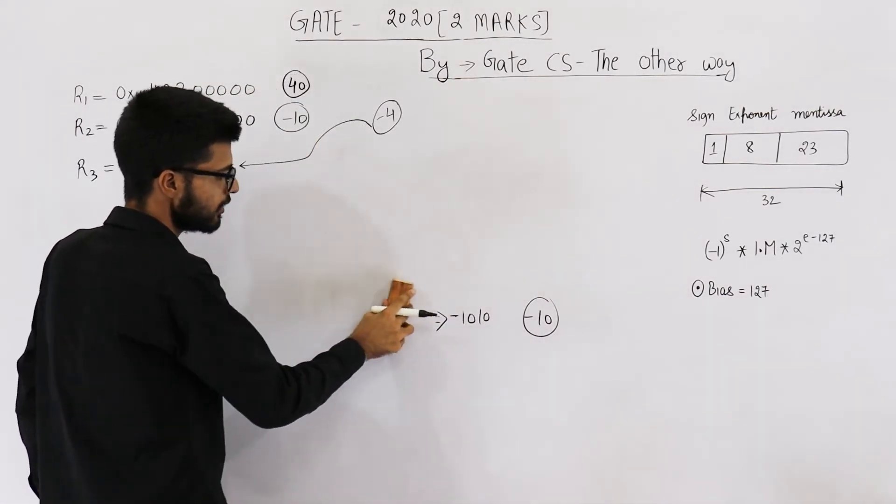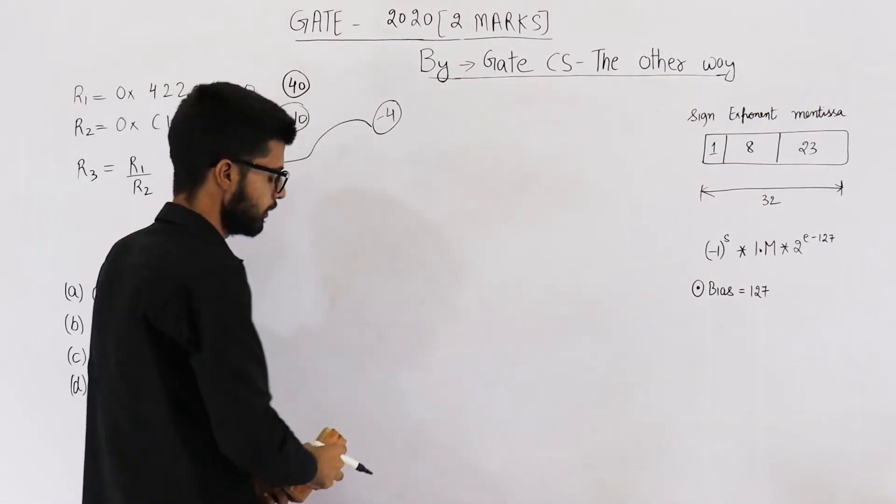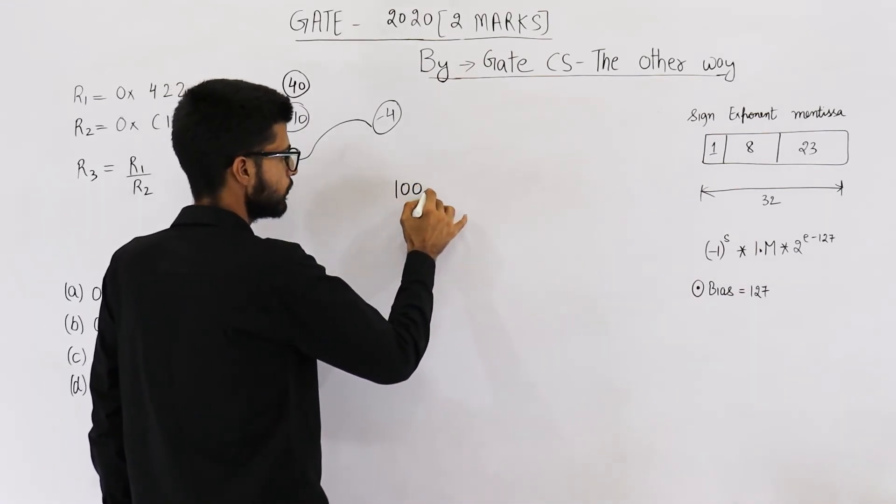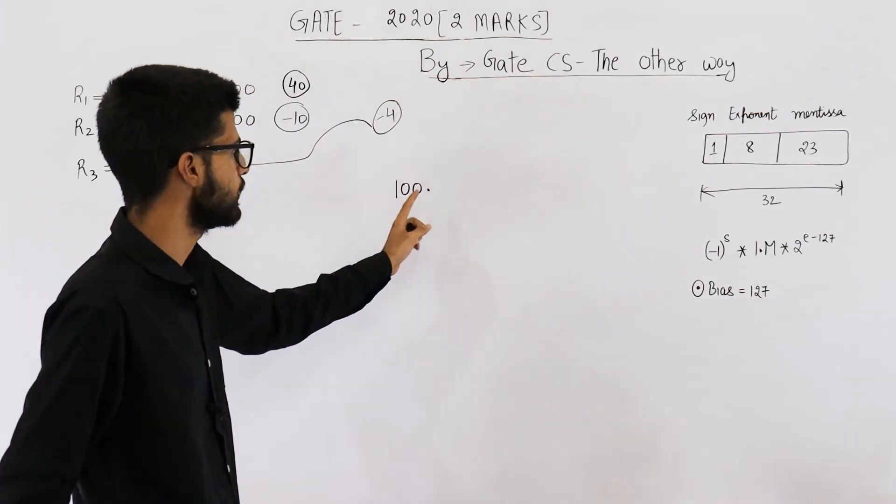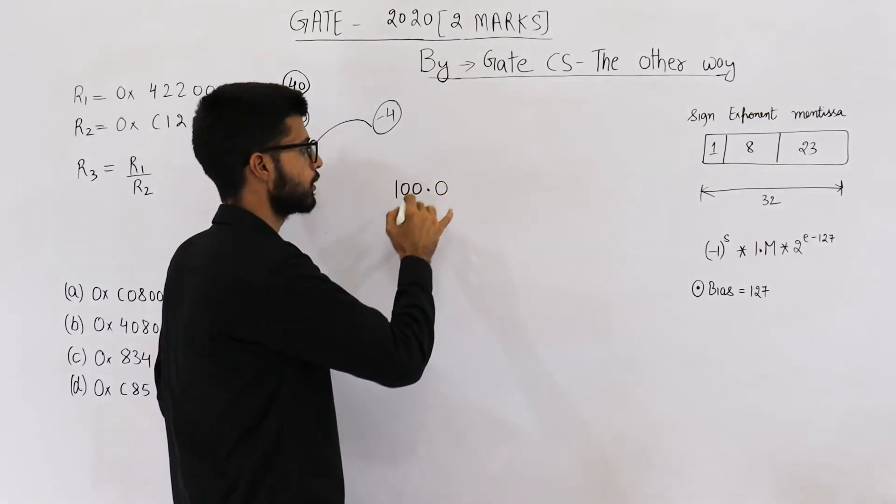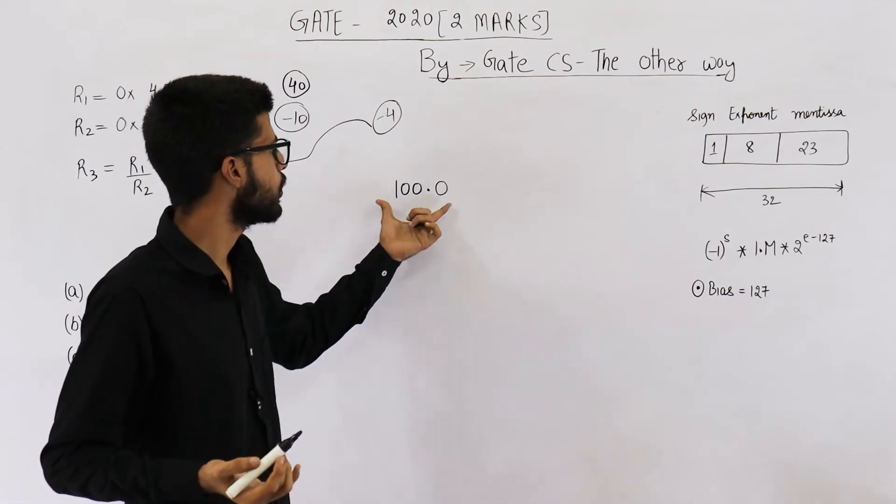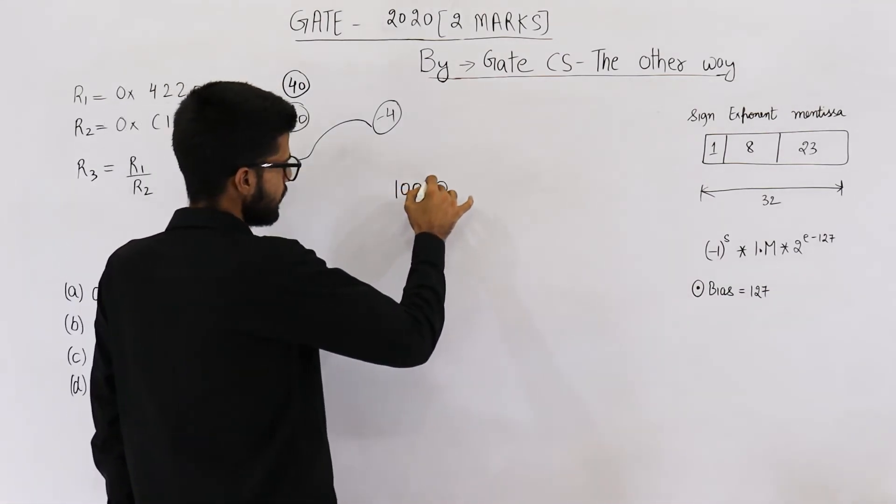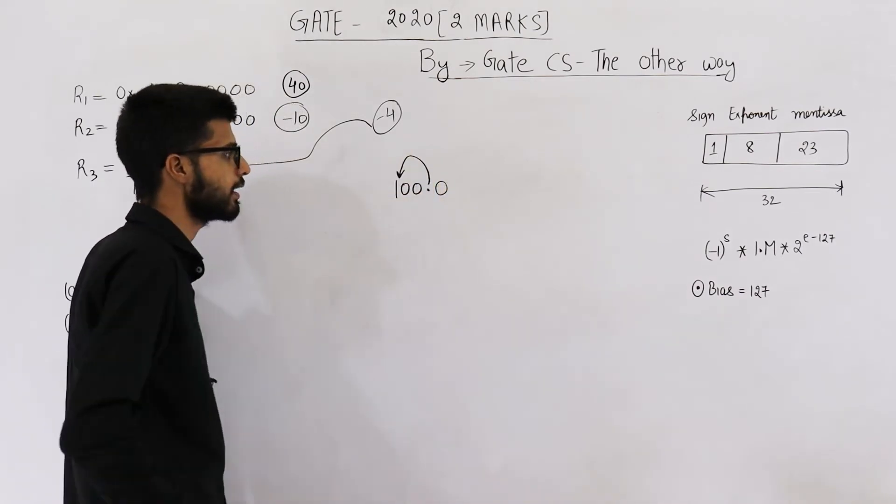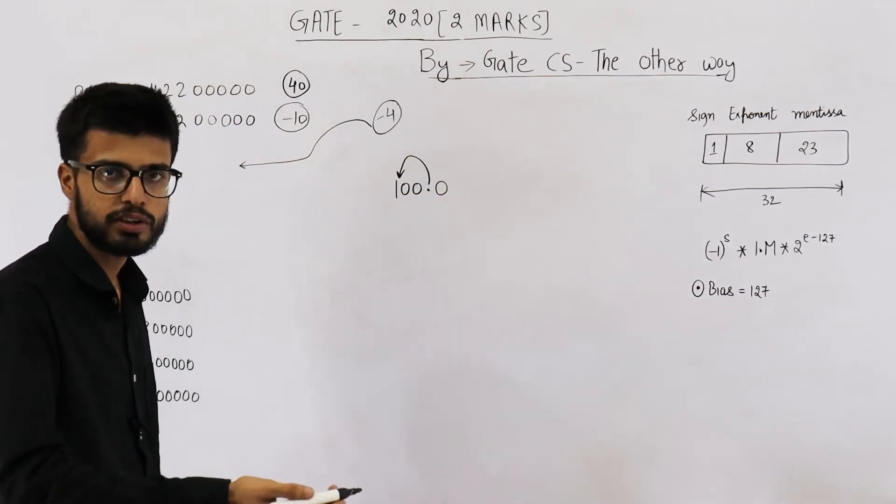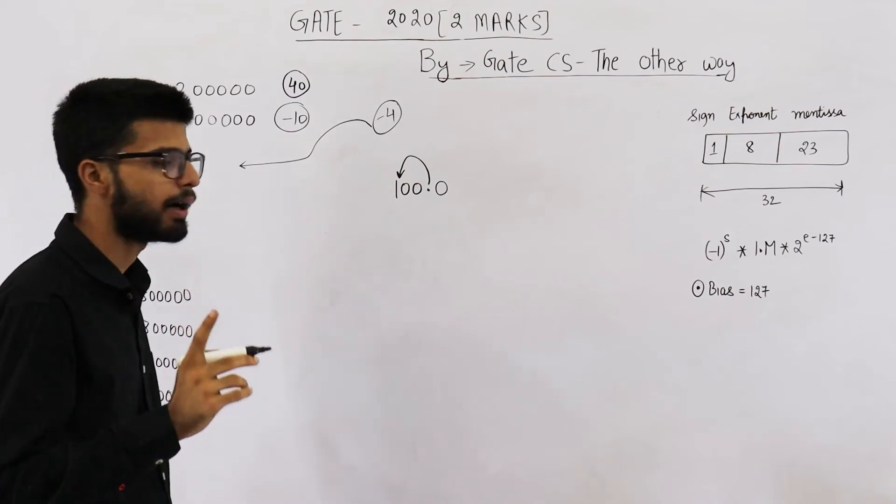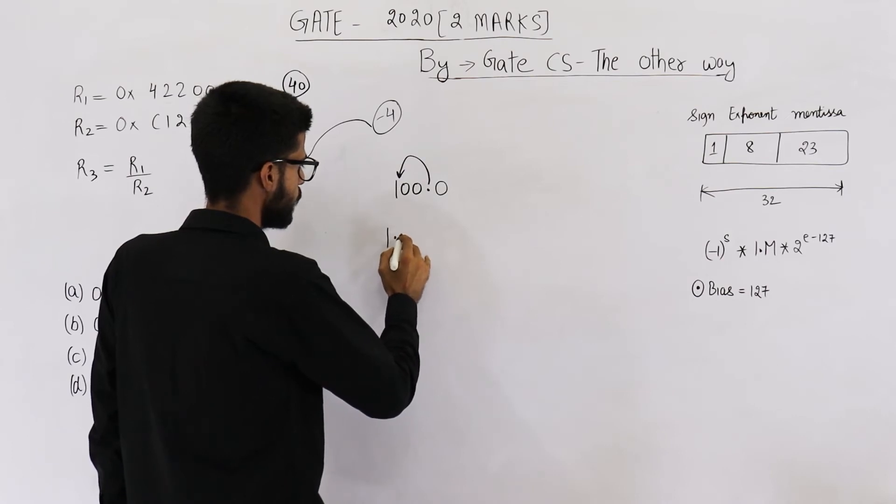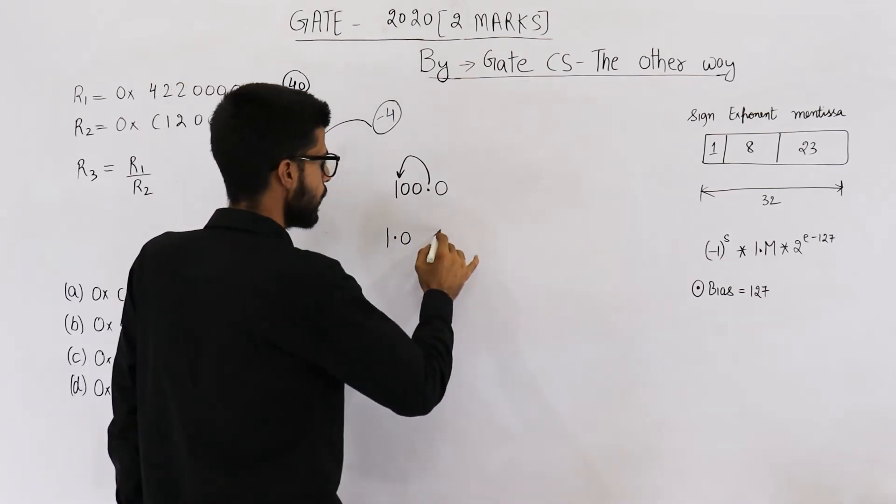Step 1: convert the decimal number into binary. So 4 can be converted into binary like this: 100.0. Step 2 is just normalize this number. Implicit normalization is used, that means we want the radix point here. We have to shift it to the left by 2 bits.